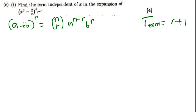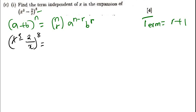Now, we are assuming we have x to the power 3 minus 2 over x, all raised to the power 8. We want to find the term independent of x — the term that doesn't have x. So this is going to be given by n, in this case is 8, and r we don't know.